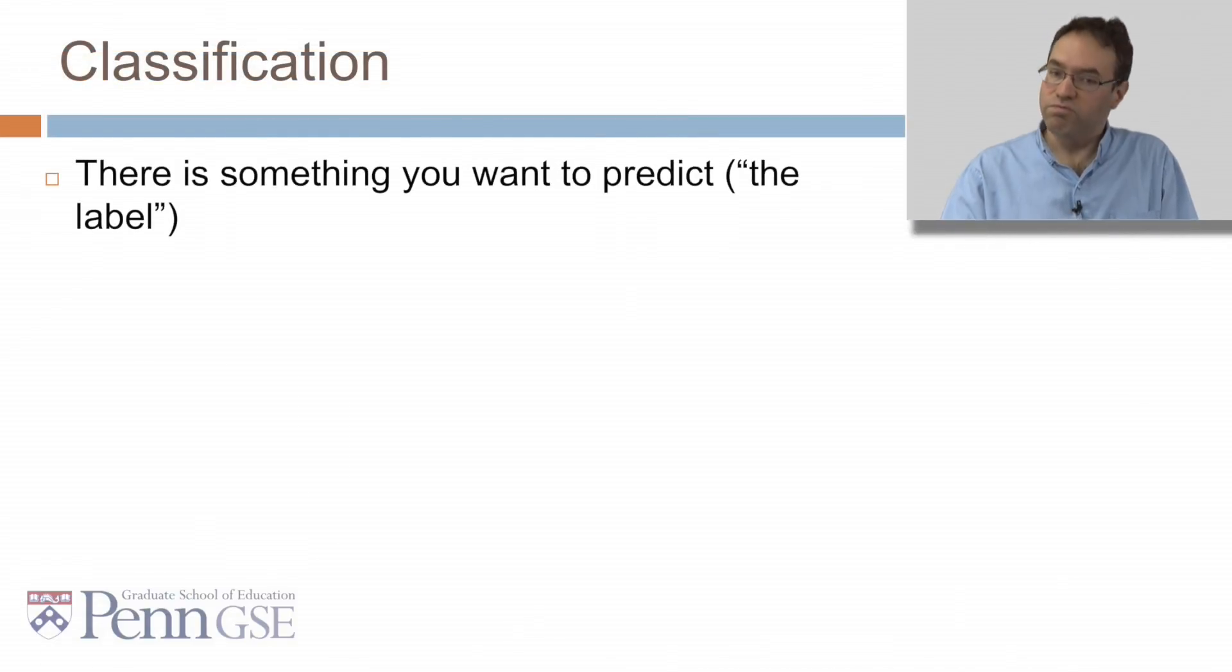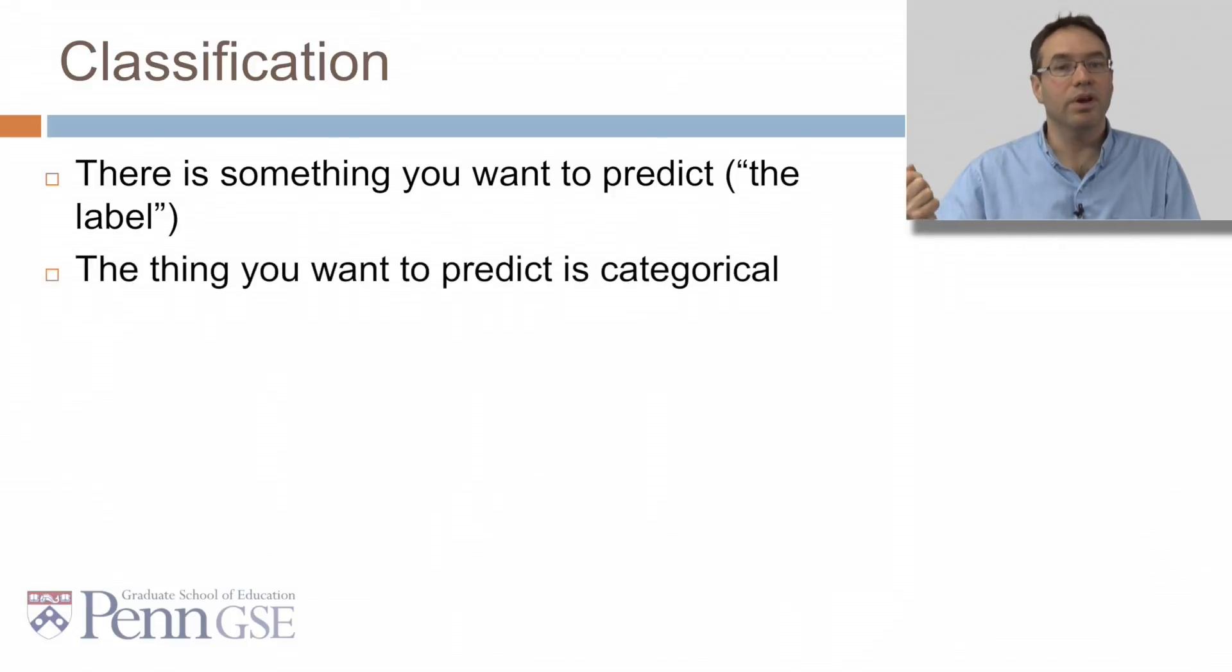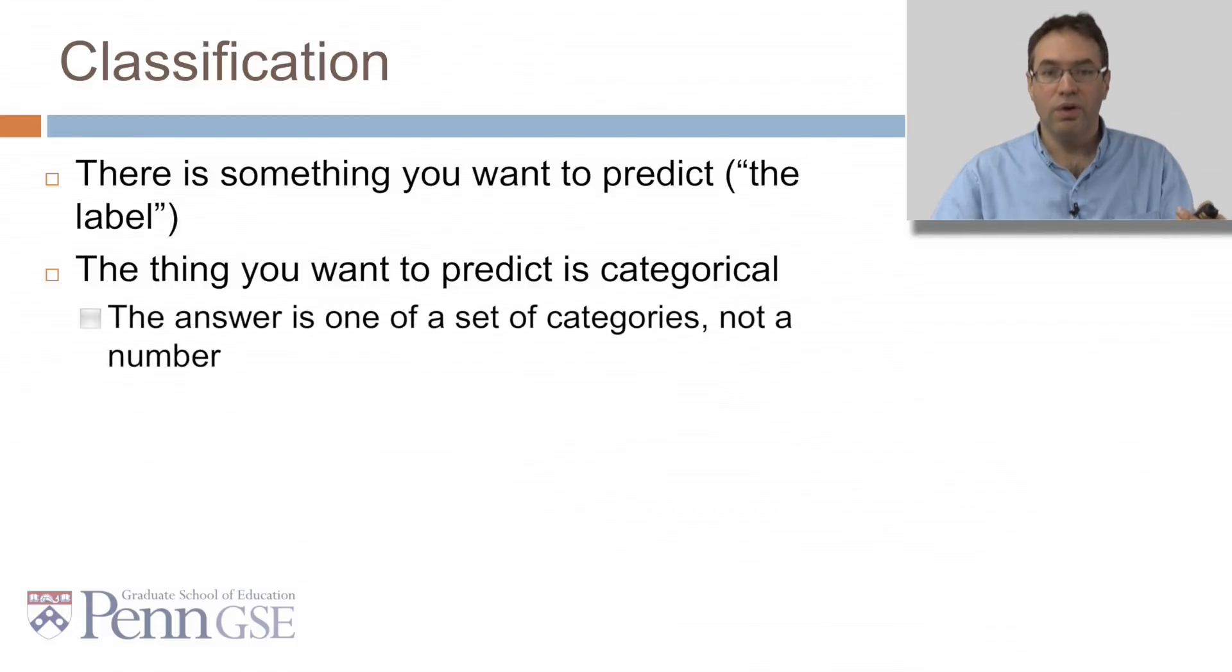So classification, let's review it really quickly. There's something you want to predict, the label. And the thing you want to predict is categorical or binary. The answer is one of a set of categories, not a number.